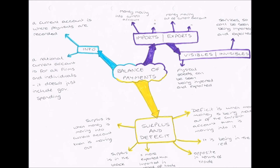Moving on, the words imports and exports should be thought of as inputs and outputs. This section is about inputs into the national current account and outputs from it. An input is money, wealth, or value moving into the national current account — this is positive because you've got wealth being injected into the national circular flow of income. An output is the opposite: money leaving the national current account, being withdrawn from the British circular flow of income.